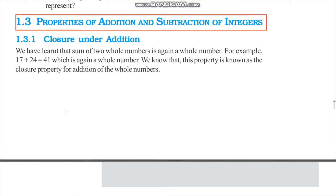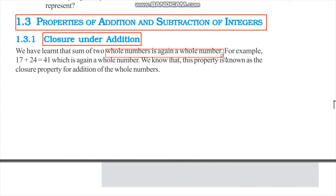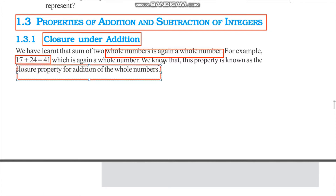The first property we are looking into is the closure property under addition. We have learned that a sum of two whole numbers is again a whole number. So when you add two whole numbers, it is a whole number. For example, 17 plus 24 is 41. We know that this property is known as the closure property for addition of whole numbers.